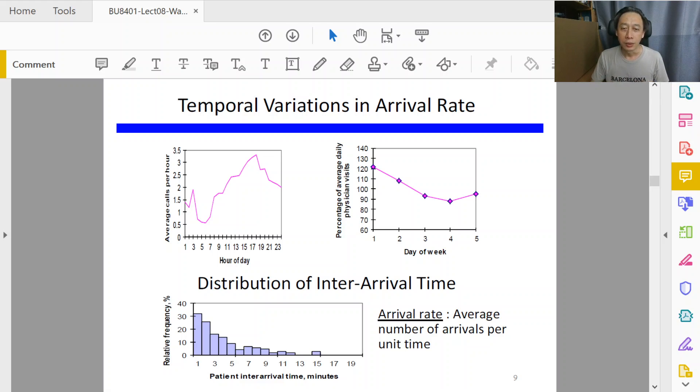On this slide we see two time series graphs illustrating two different locations. One is about calls per hour, incoming calls per hour to perhaps a call center, and the other is about average daily physician visits for a particular ward or patient bedroom. Let's look at the left-hand side.